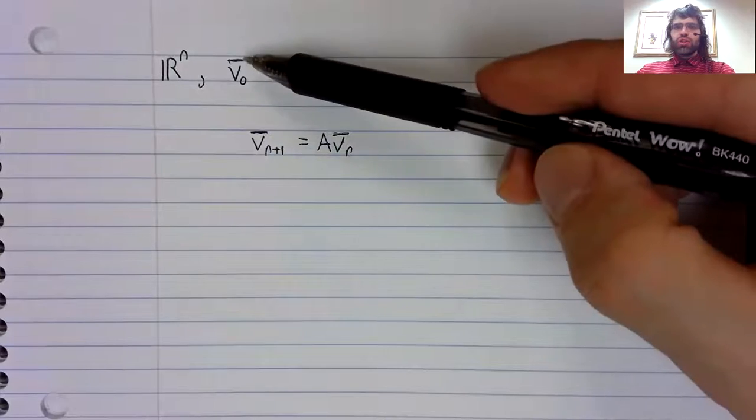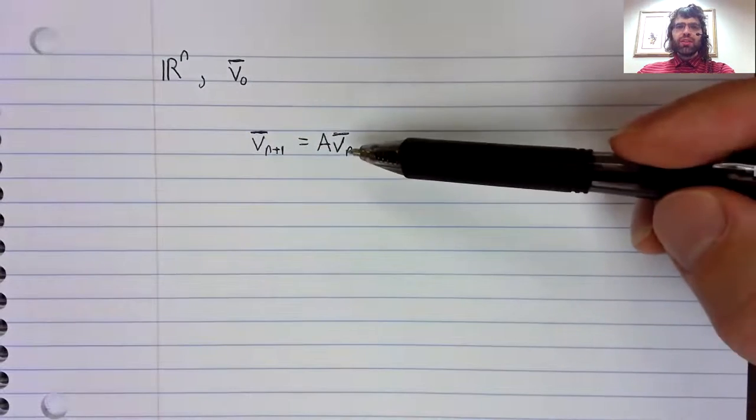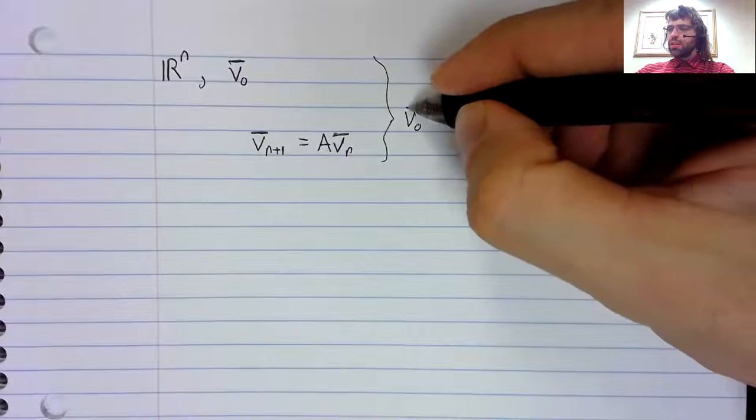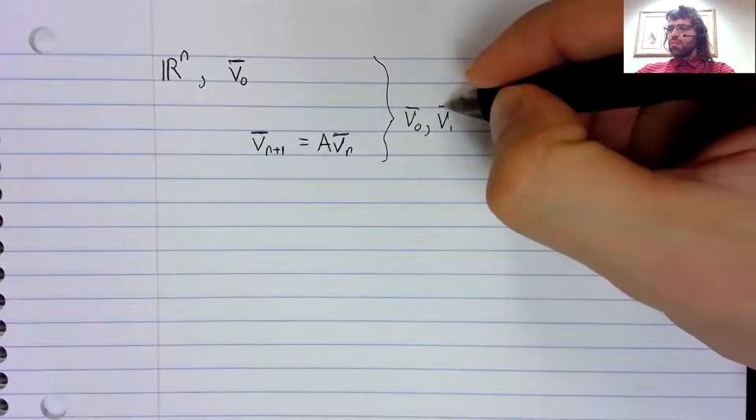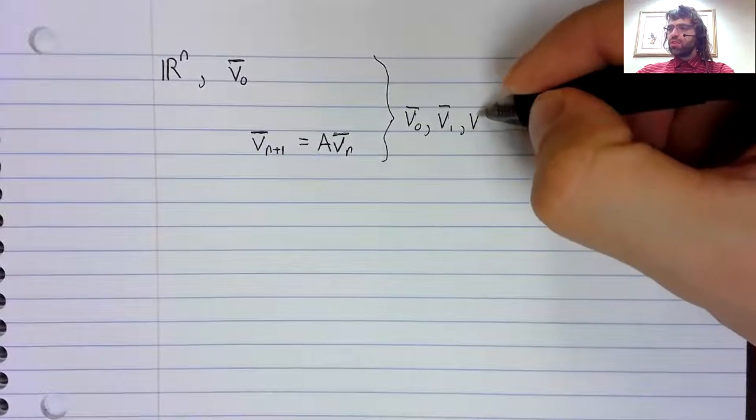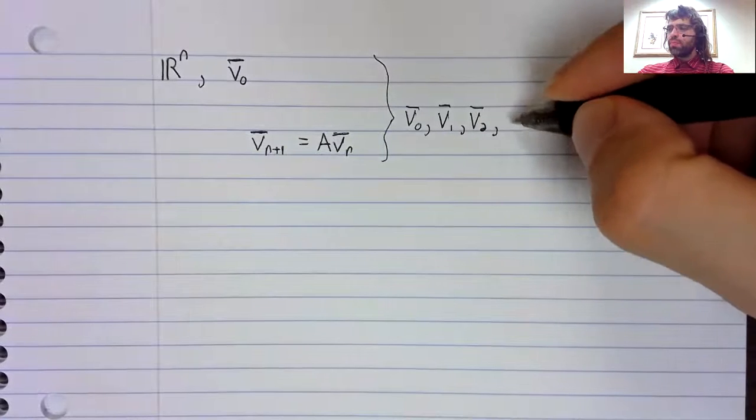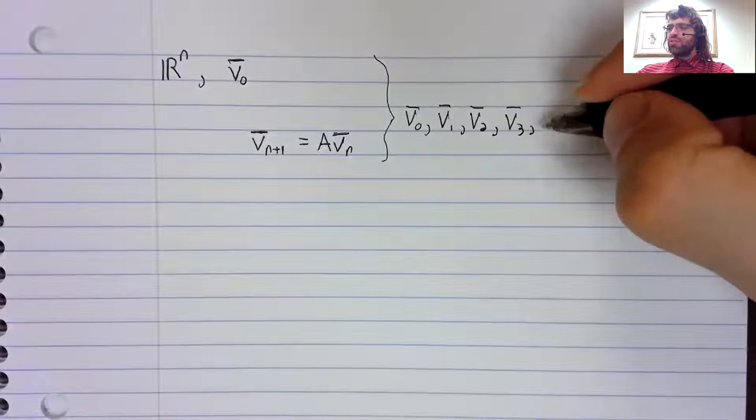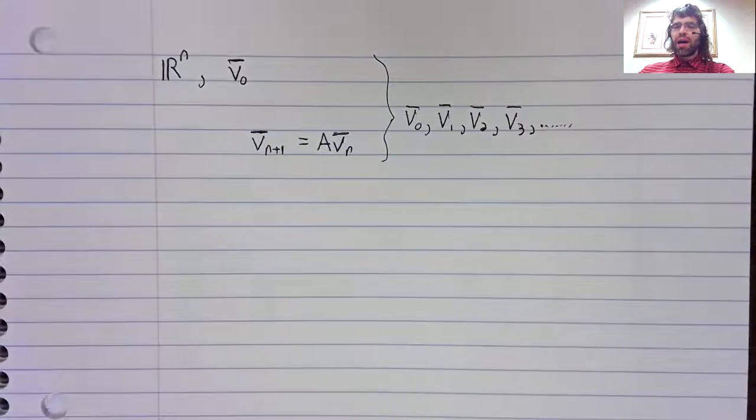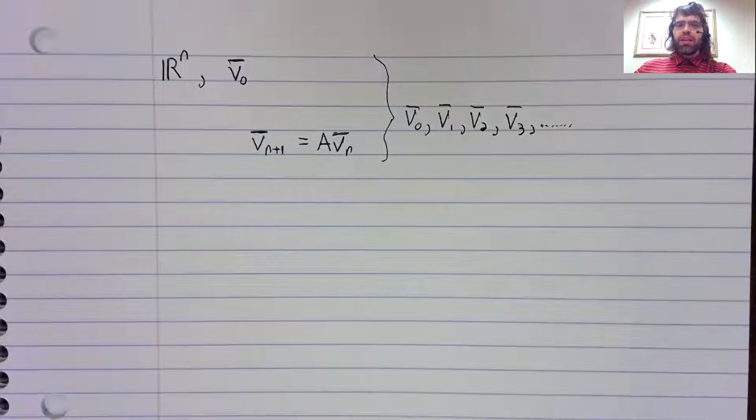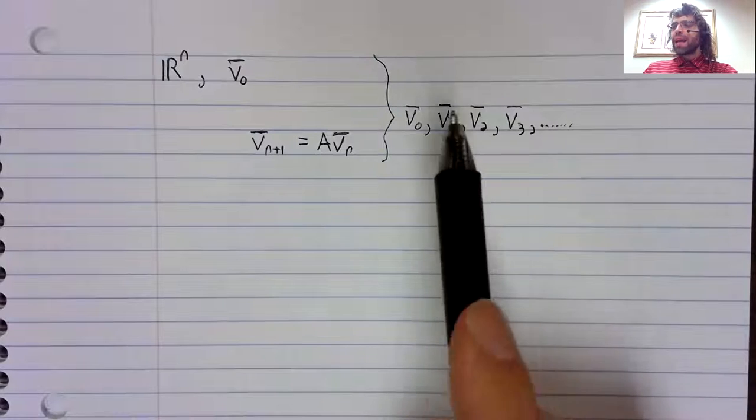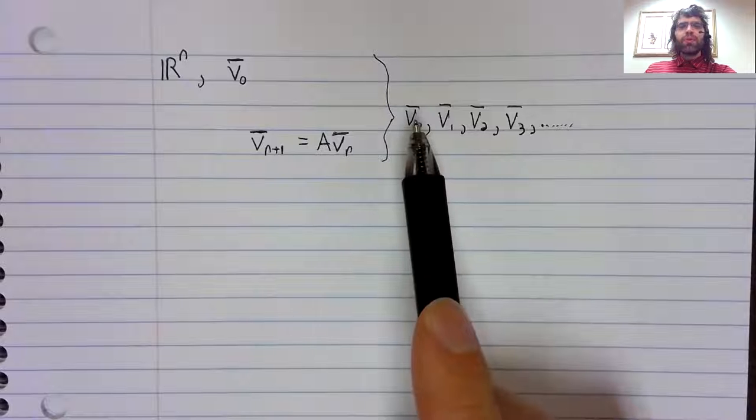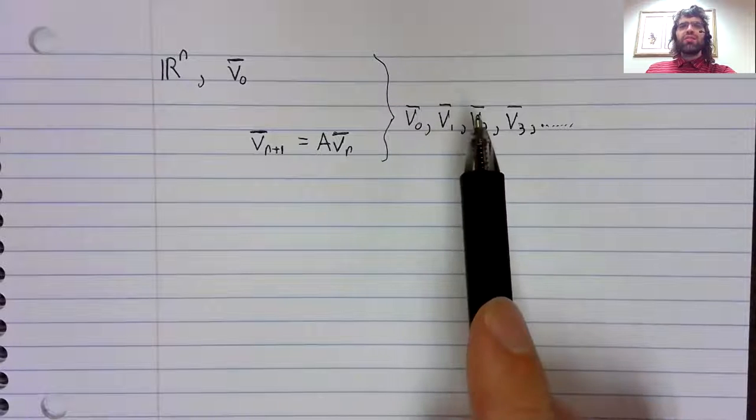And this initial state and this recursive definition gives you a list of vectors. I used the phrase discrete time. The image here is that time is passing, and as time passes, we're going from state to state to state.